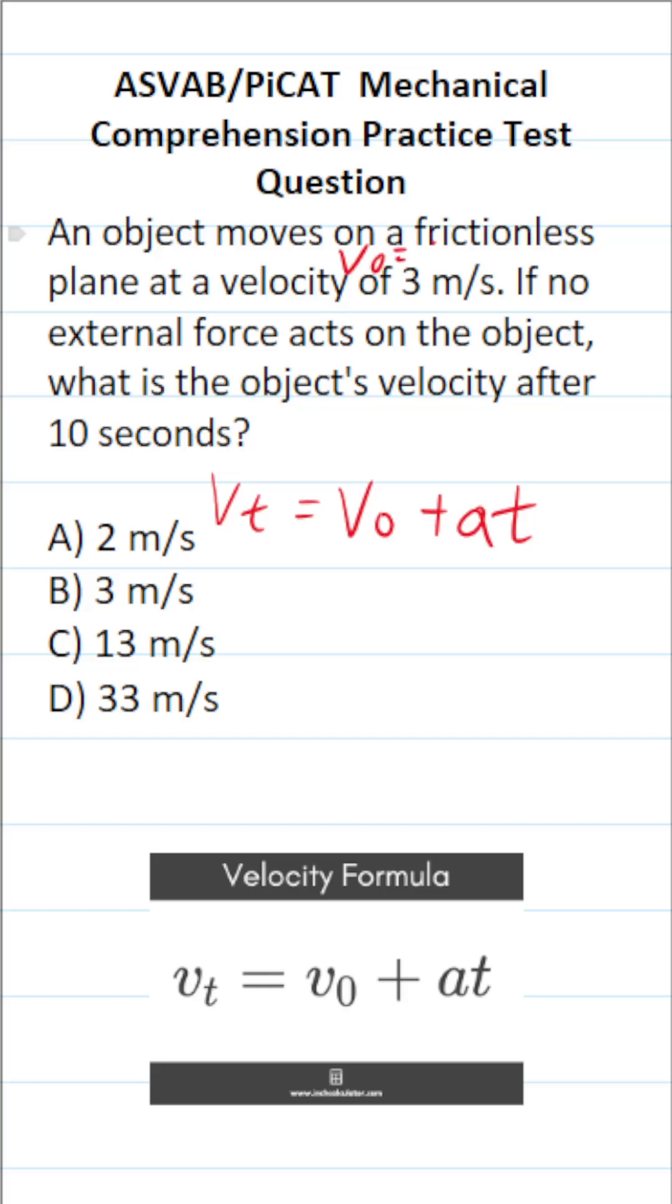Our initial velocity, V of o, is going to be 3 meters a second. We know time is going to be 10 seconds.